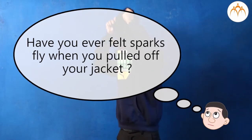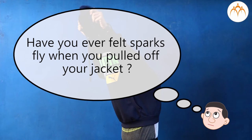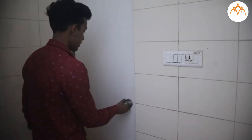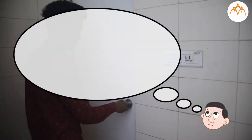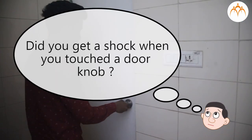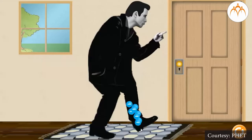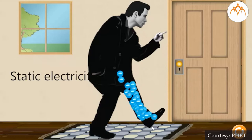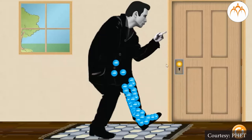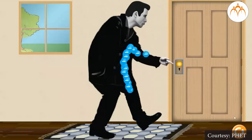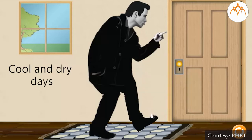Electrostatic force. Have you ever felt sparks fly when you've pulled off your jacket? Or did you get a shock when you touched a door knob? These things happen because your body is collecting electricity. The sparks are called static electricity — electrons that pile up in one place. This is especially true on cool and dry days.